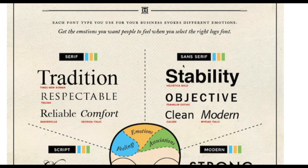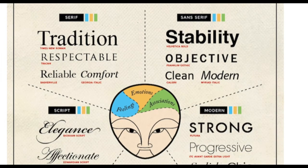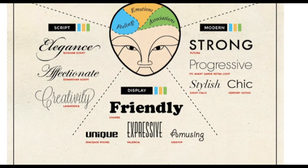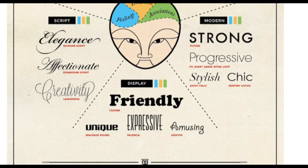For sans serif — without serifs — we have stability. Helvetica Bold is listed, and you'll be surprised at how much Helvetica actually gets used; it's everywhere. Once you start looking at fonts, you'll realize which ones get used more often and why. Feel free to come back to this chart once you're done with the video and study it more deeply.